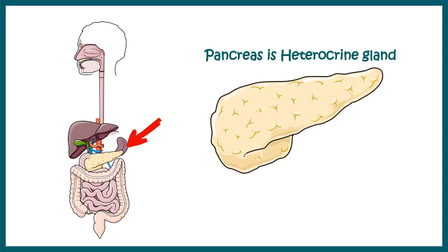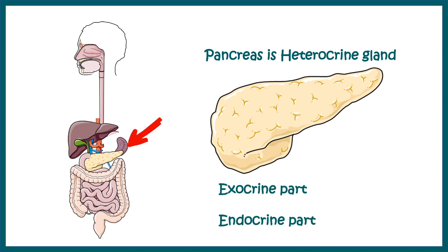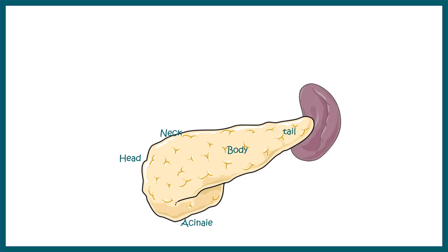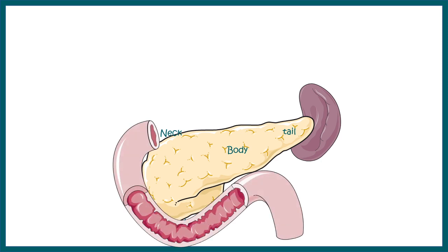The pancreas is a heterocrine gland, which means it has both an exocrine part and an endocrine part. Anatomically, the pancreas is divided into a few regions: the acini, head, neck, body, and the tail. The tail of the pancreas touches the spleen, whereas the head and acinar part is towards the arch of the duodenum.